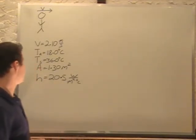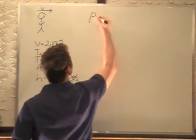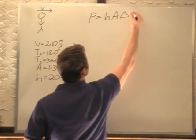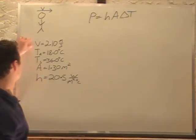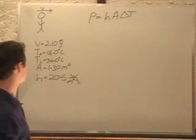And we want to find the convective heat loss. So the convective heat loss is P equals hA delta T. Now that doesn't include velocity at all, so we actually don't have to use velocity but we do have to use all the rest of this information.